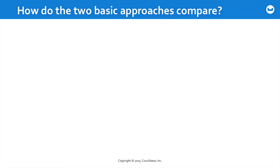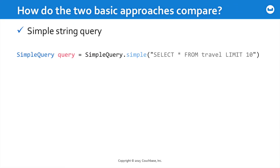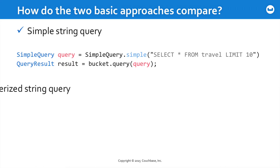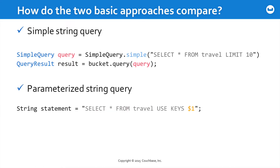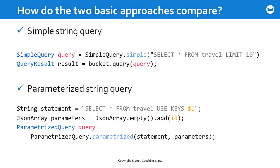Let's look a little closer at how the two basic approaches compare. For a simple string query, you just pass a statement to the simple method, which gives you back a query object that you pass to the query method of the bucket. For a parameterized query, you could use positional parameters as shown here, or named parameters as you would see in the documentation. You create a JSON array to hold all your parameters, then pass that array along with the statement to the parameterized factory method to create your query, and then pass that query to the bucket.